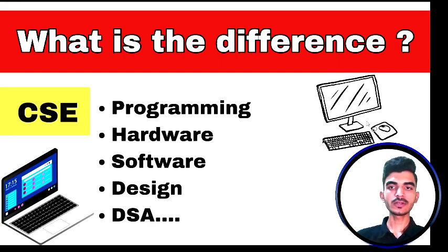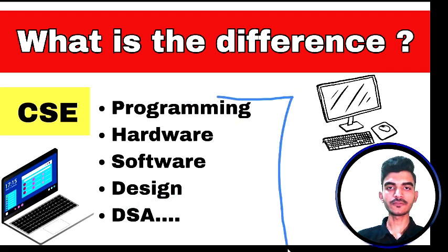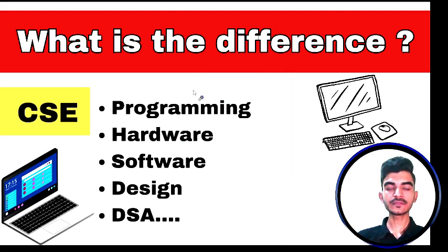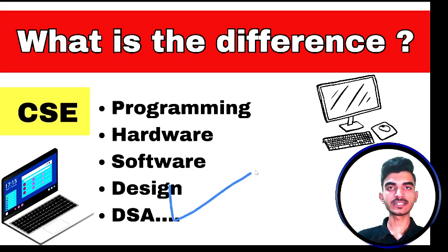Regarding the course, what you're going to learn in computer science: it is all related to the programming part, the hardware part, the software part, design, data structures and algorithms. These are the things which come under computer science. That is why everybody is behind computer science — because apart from the specialization, you will be open to a variety of fields. You will be learning about programming, hardware, software, and designs.